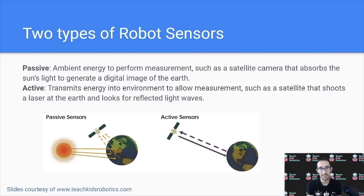On the active side, we have sensors that transmit energy into the environment to allow for a measurement, such as a satellite that shoots a laser at the earth and looks for reflected waves in order to compute the distance between it and the earth. Another common sensor again that would be active is like the lidar, which shoots lasers into the world around it to determine the distance between it and the reflected wave.